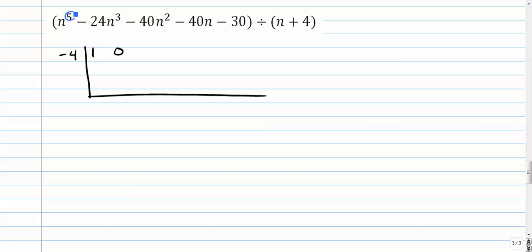We have 1 into the 5th. 0 with a placeholder there. Remember what I said. There's a 5 and a 3. There's a 4 in between. So we have to set up a placeholder. And then we have negative 24, negative 40, negative 40, negative 30.